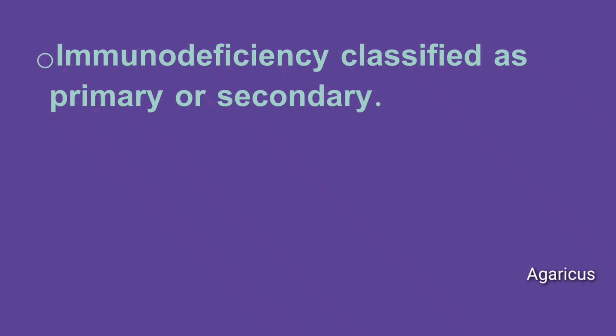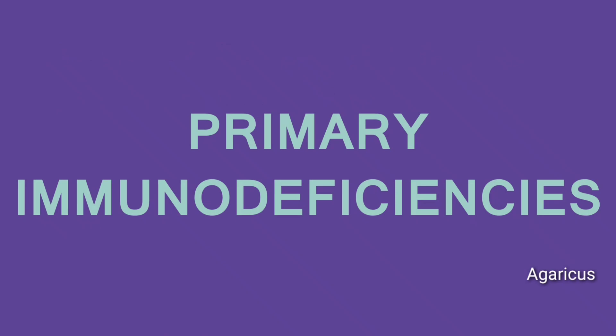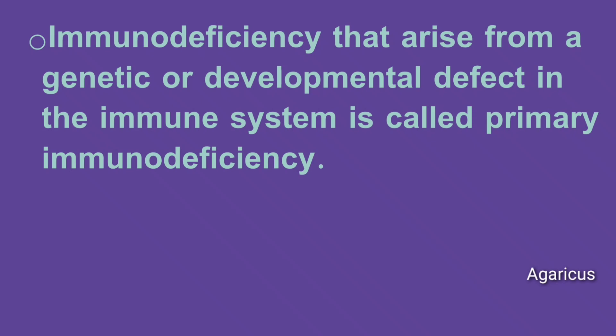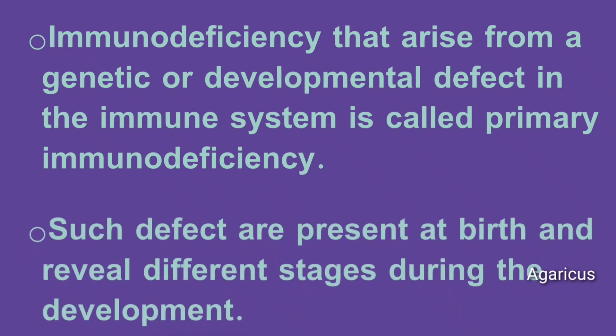Immunodeficiency is classified as primary or secondary. First, we are discussing primary immunodeficiencies. Immunodeficiencies that arise from a genetic or developmental defect in the immune system are called primary immunodeficiencies. Such defects are present at birth and reveal themselves at different stages during development.